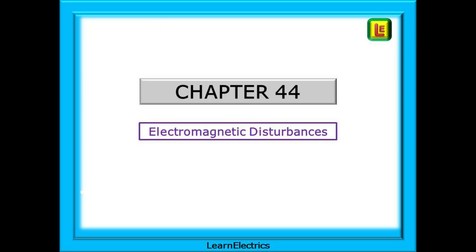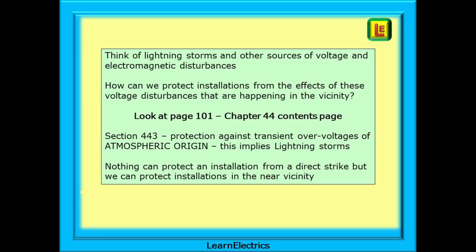Now look at Chapter 44 — electromagnetic disturbances. Think of lightning storms and other sources of voltage and electromagnetic disturbances. How can we protect installations from the effects of these voltage disturbances happening in the vicinity of the installation? Look at page 101, the Chapter 44 contents page. We can see section 443: protection against transient overvoltages of atmospheric origin, implying lightning storms. Nothing can protect an installation from a direct strike, but we can protect installations in the near vicinity from these voltage disturbances, which can be significant.